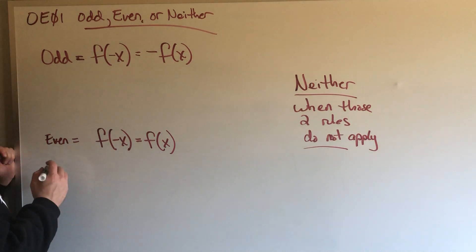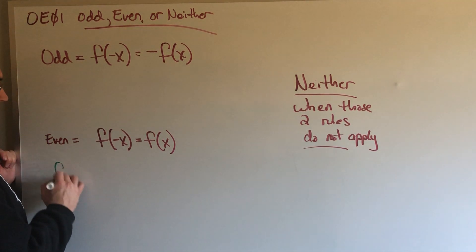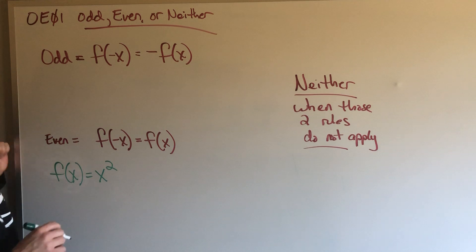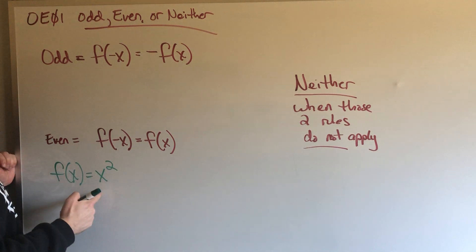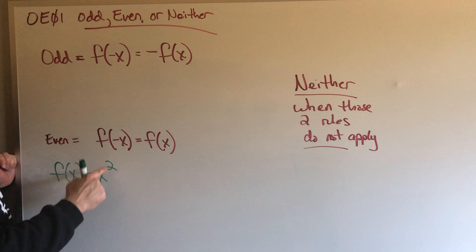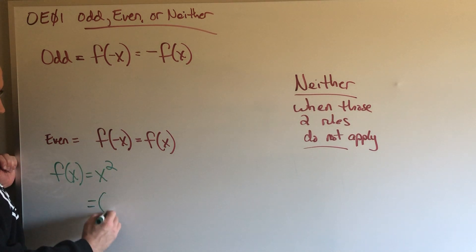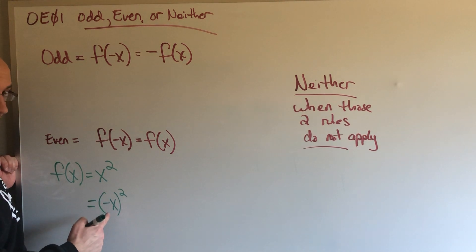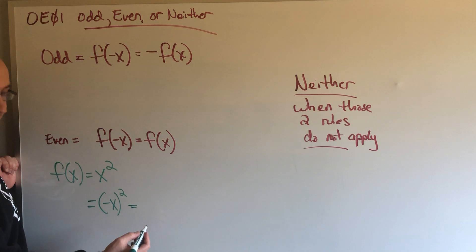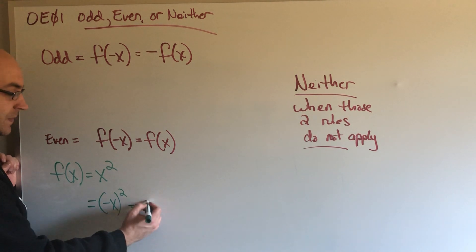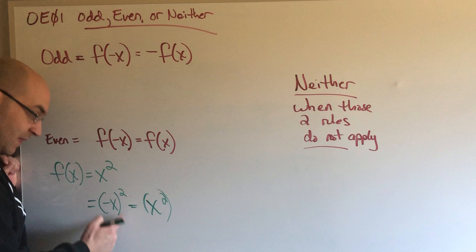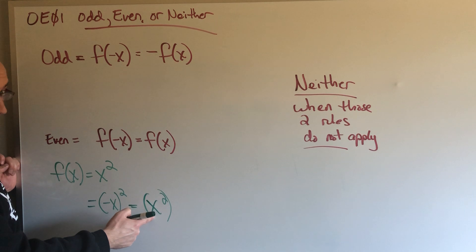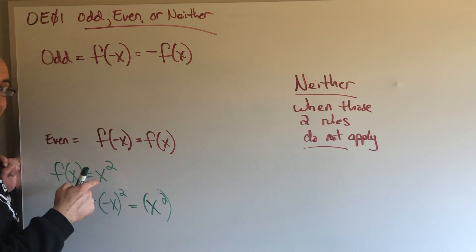So the function f of x equals x squared. This will be an even function. Now let's see why. If I were to replace this x value with a negative x — meaning every time I see that x, I replace it with a negative x — negative x squared is just x squared, because that's how it simplifies. Now I know that when I had a negative x, it equals what the function started out as: x squared. This classifies as even.